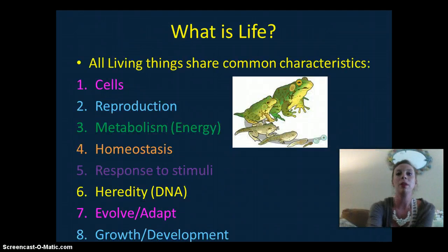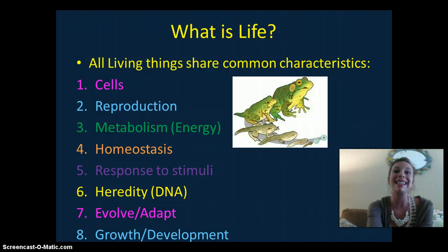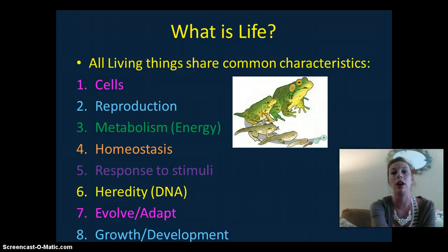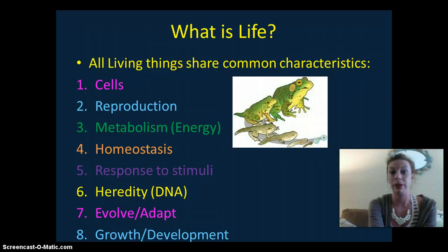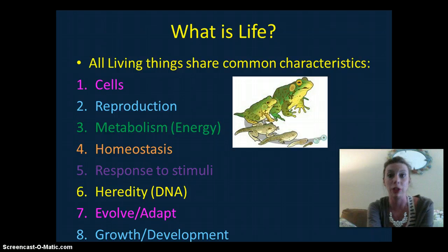So the first question I'm going to ask you is, what is life? Well, biology is the study of living things, and all living things are going to share eight common characteristics. They are: all living things are made of cells, which is part of the cell theory. Two, reproduction. All living things are going to reproduce some way, somehow. They have the ability to reproduce either asexually, sexually, or bacteria will reproduce through binary fission.